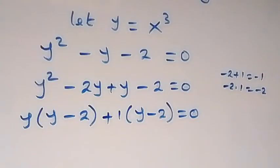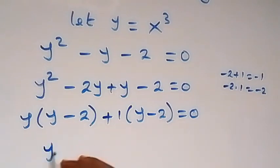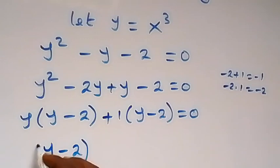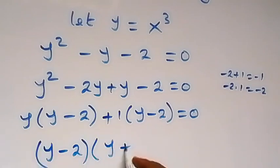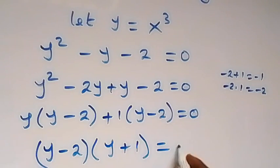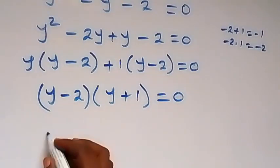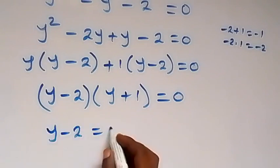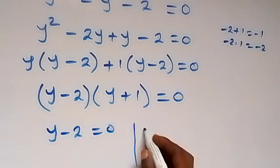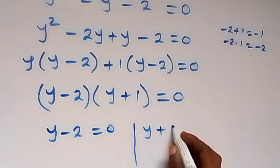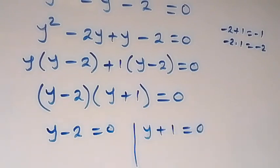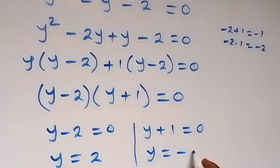Then here, we have y minus 2 common. So we have y minus 2, multiplied by y plus 1, which is equal to 0. Then here, we have y minus 2 equals to 0, or y plus 1 equals to 0. So from here, we have y equals to 2, and y equals to minus 1.